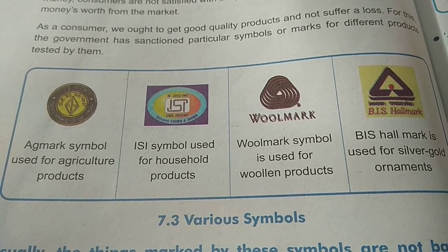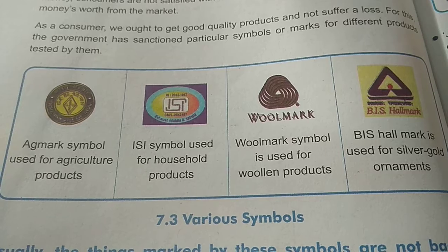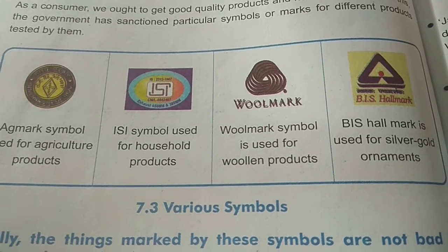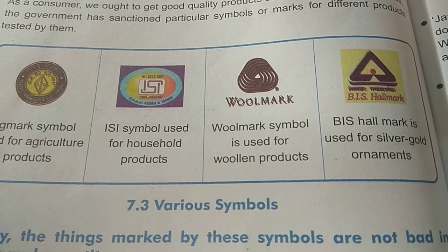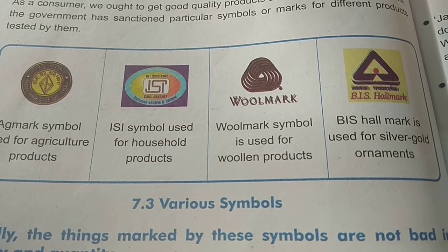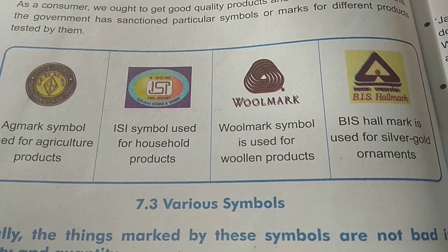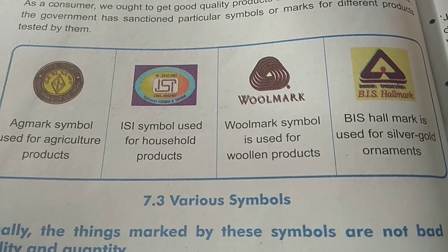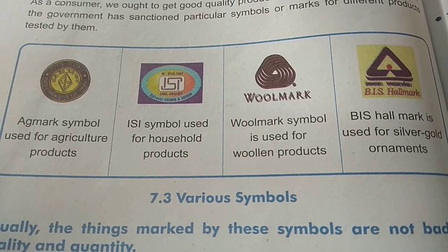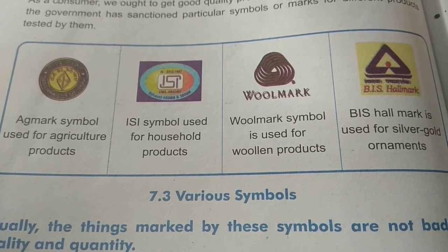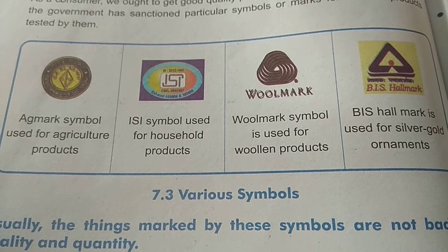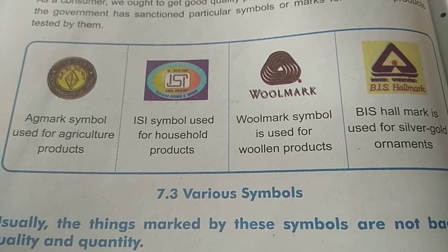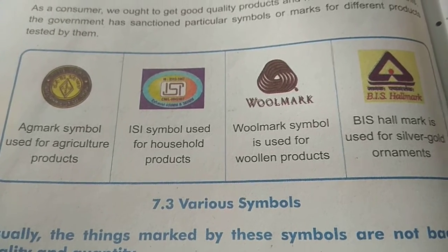The ISI symbol is used for household products. Similarly, for woolen products there is the Woolmark symbol, and the BIS hallmark is used for silver or gold ornaments — it indicates the purity of the product. All these symbols are allotted to make the consumer aware about the quality and purity of the product, as guaranteed by the government.